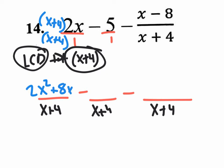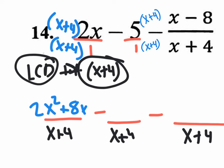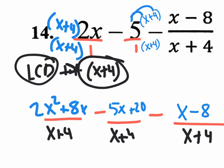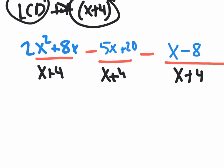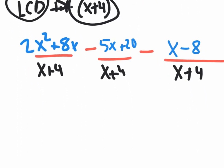Now do the same to the middle fraction — change it to an X plus four by multiplying both top and bottom by X plus four. Distribute: five times X gives five X, and five times four gives 20. For the last fraction, the denominator is already X plus four, so you don't do anything — just bring down X minus eight. Now all three fractions have a common denominator, so we can combine all the numerators over the common denominator X plus four.